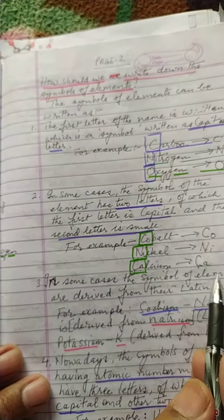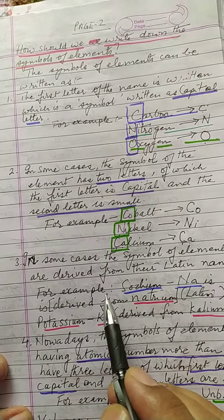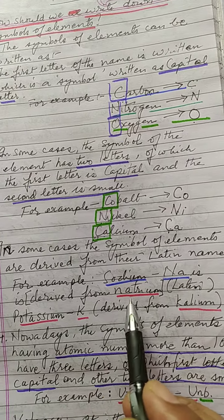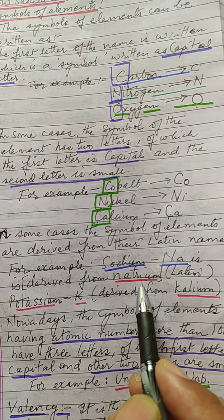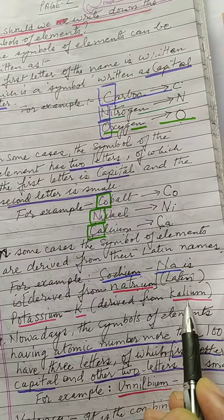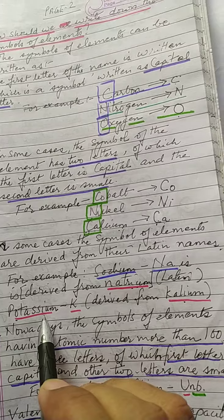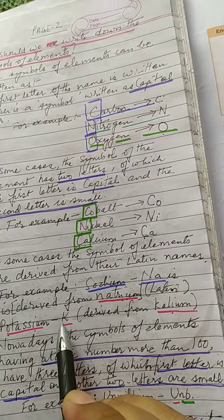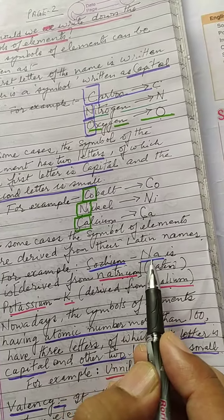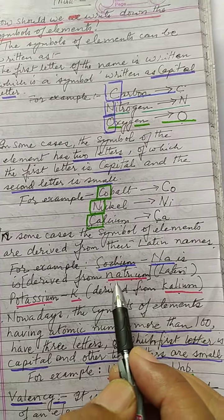In some other cases the symbols of elements are derived from their Latin names. For example, sodium is derived from 'natrium,' which is a Latin word for sodium, and so it is symbolized by Na. Likewise, 'kalium' is the Latin word for potassium, and so potassium is symbolized by the letter K.